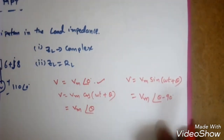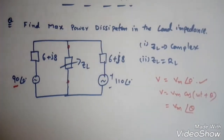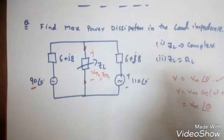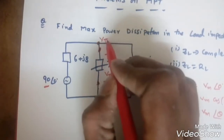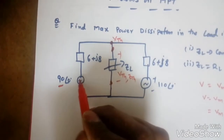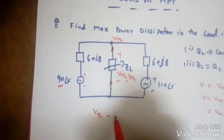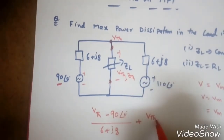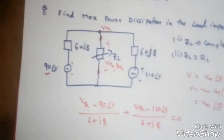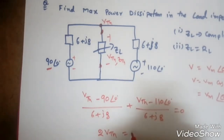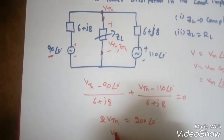To solve this circuit, we open the load terminals and place Vth and Zth. To find Vth, we apply nodal analysis. Since no polarity notation is given, we assume the standard plus-minus convention. Applying nodal analysis: (Vth − 90∠0°)/(6 + j8) + (Vth − 110∠0°)/(6 + j8) = 0. The LCM is the same, so 2·Vth = 200∠0°, giving Vth = 100∠0°.